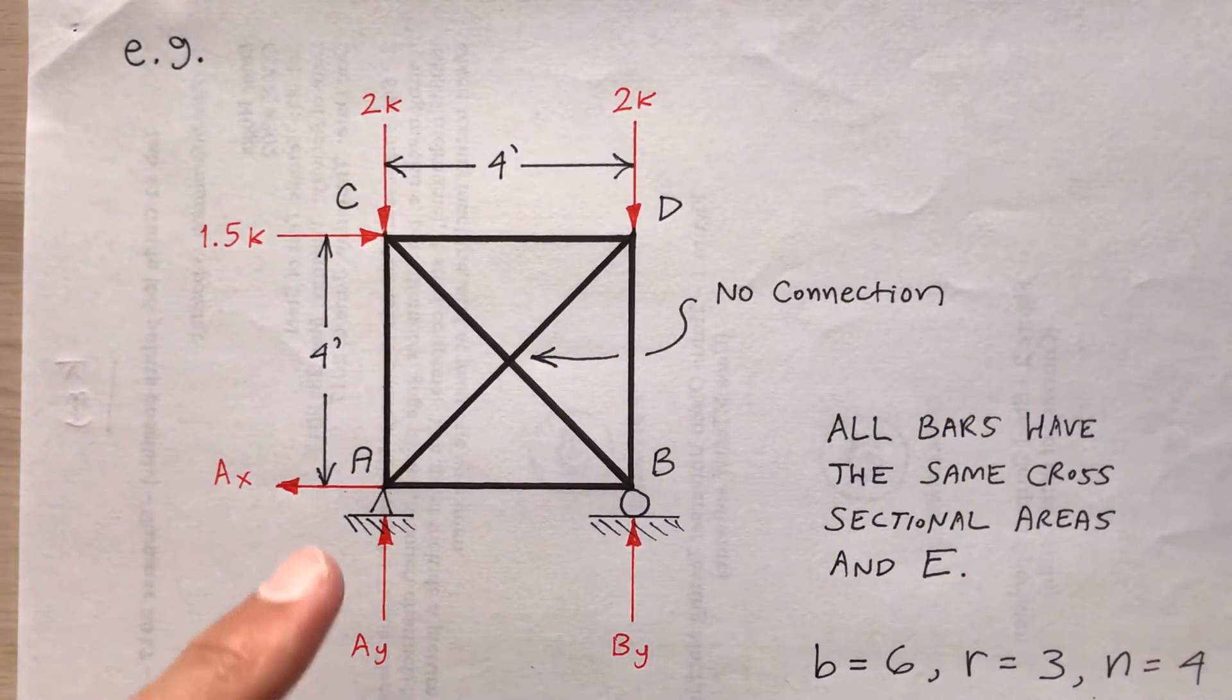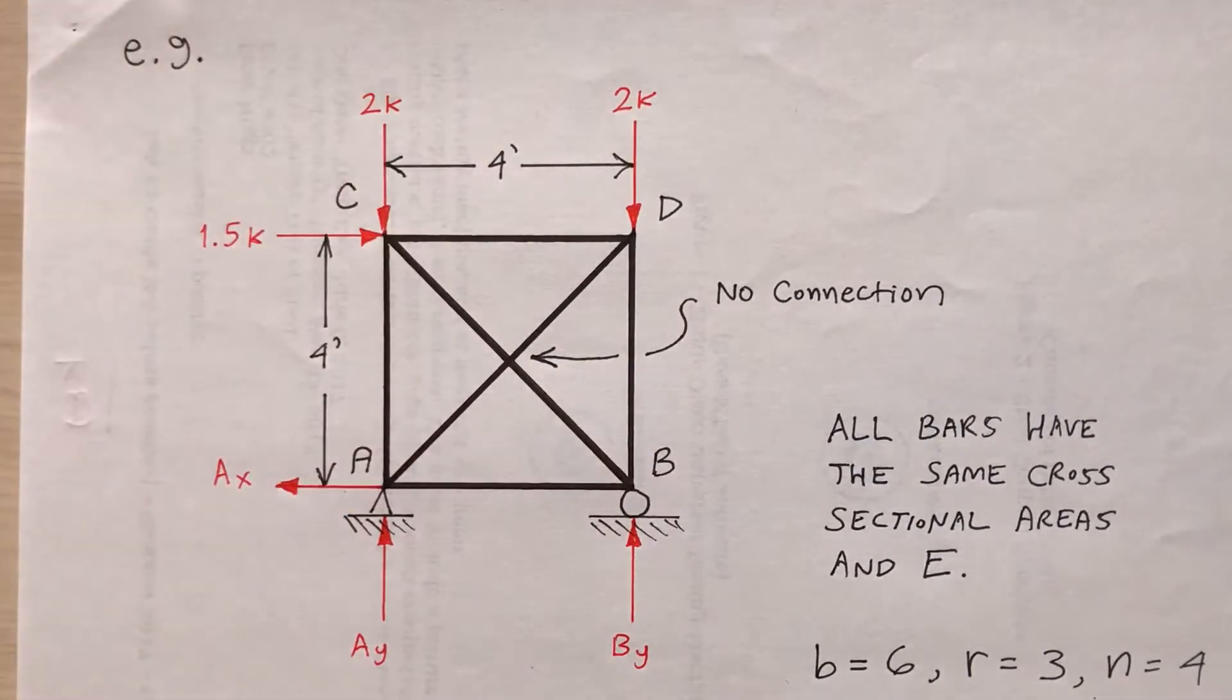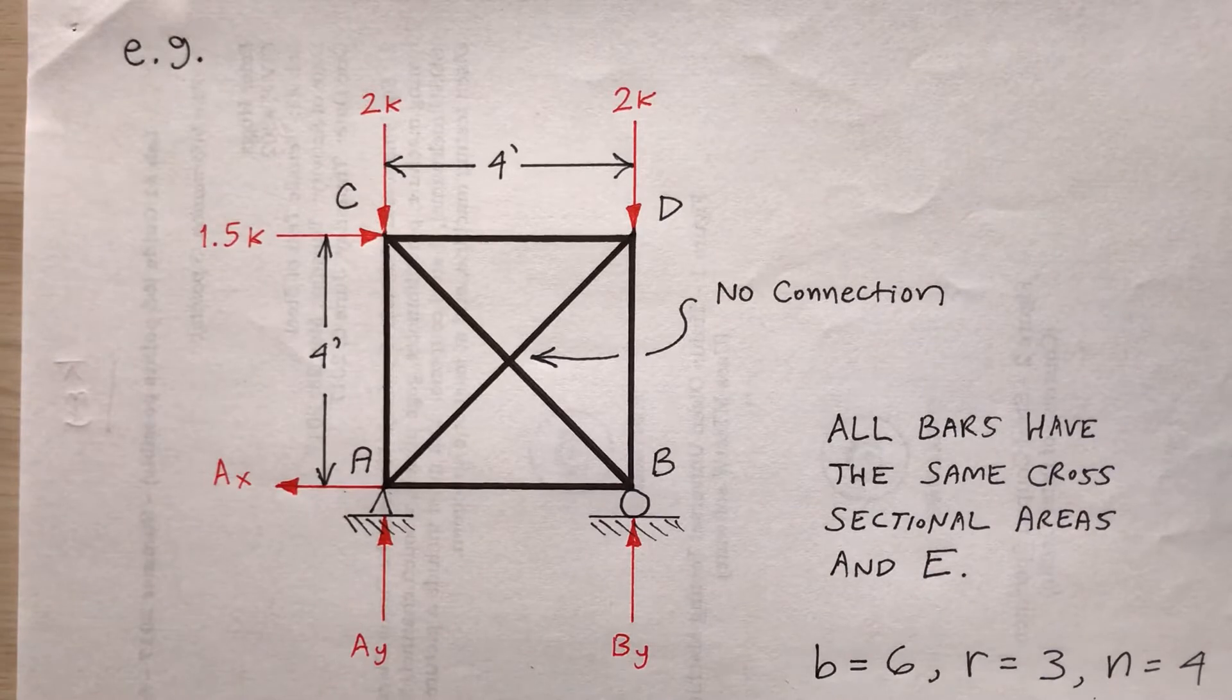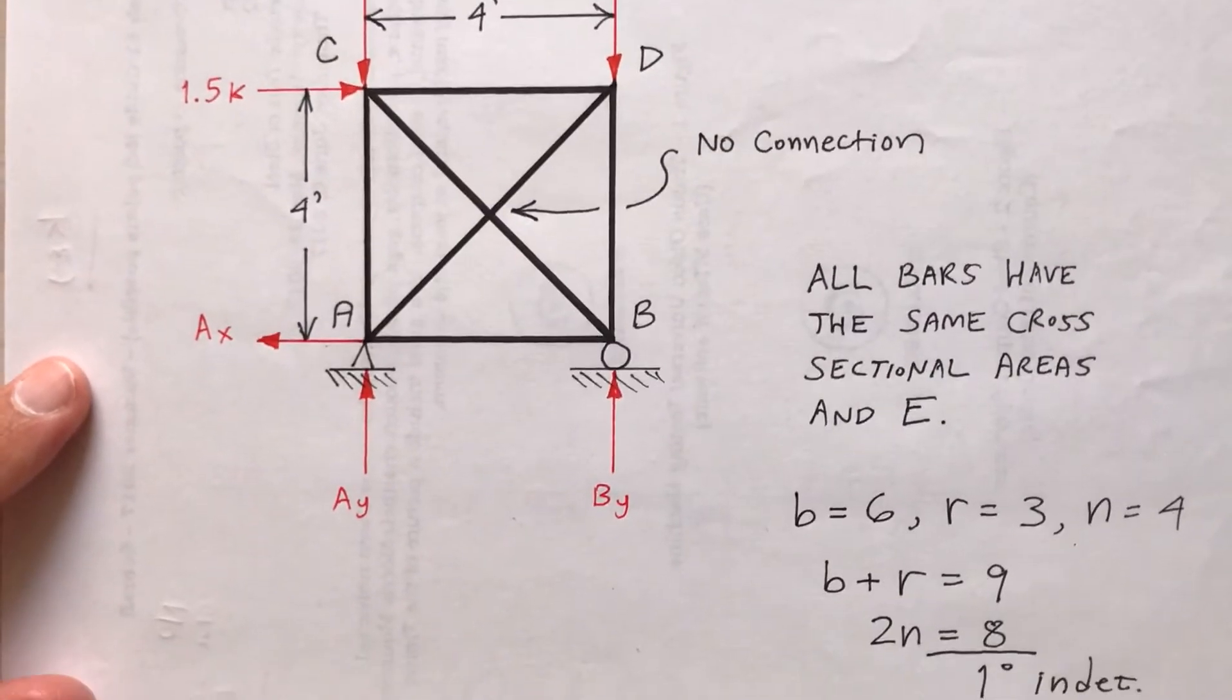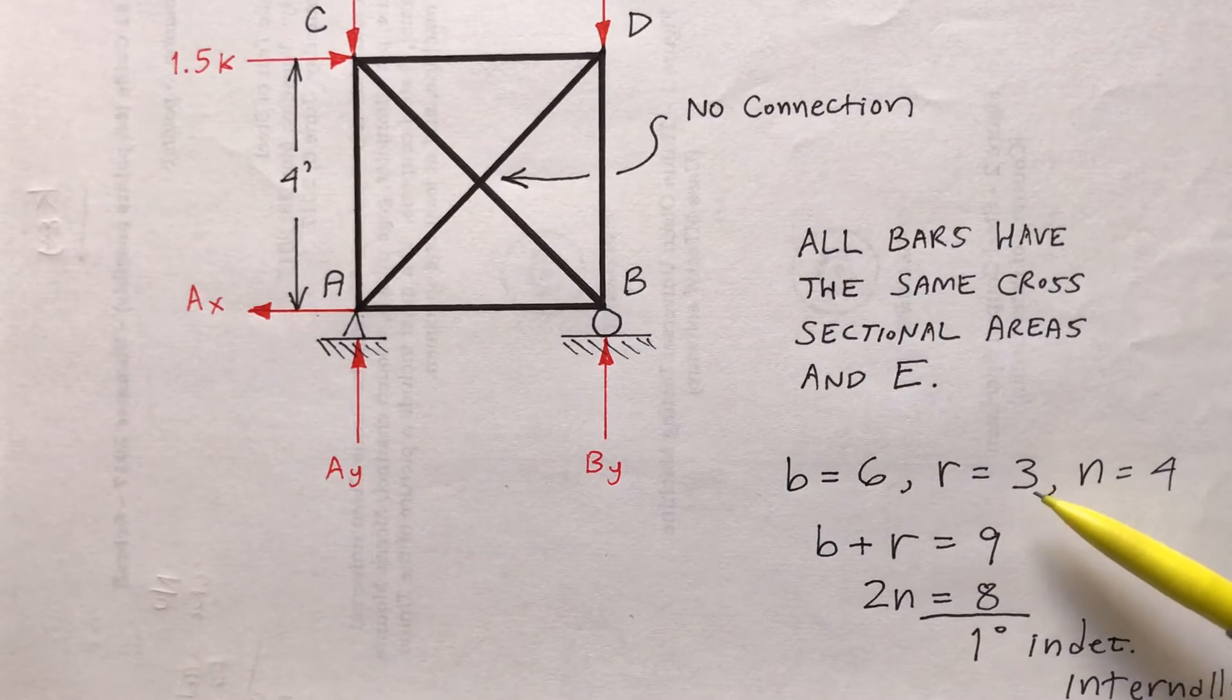All bars have the same cross-sectional areas and Young's modulus. No connection here between bars AD and BC. Notice I've got three reactions, two at A and one at B. I've got three loads: 1.5 kips, 2 kips, 2 kips. So a classical truss problem that I made up for purposes of demonstrating an indeterminate truss. So B is 6, R is 3, N is 4.